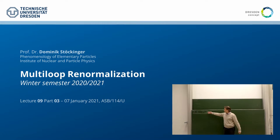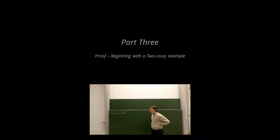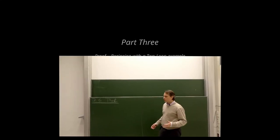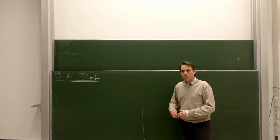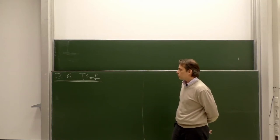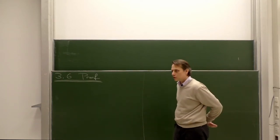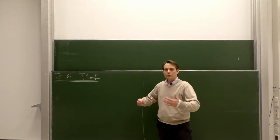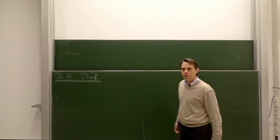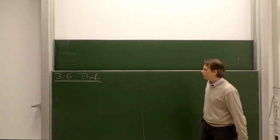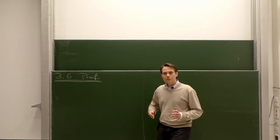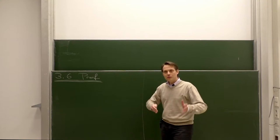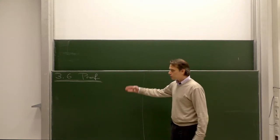We will begin with Section 3.6, which consists of the proof of the convergence theorem in dimensional regularization. In the previous section, we did a lot of work setting up our integrals and the forest formula, which gives the basis of our proof. But now we actually carry it out — we will do the integrations and see how the claimed analytical structure arises. In order to motivate the structure of the proof, we will start with an example.